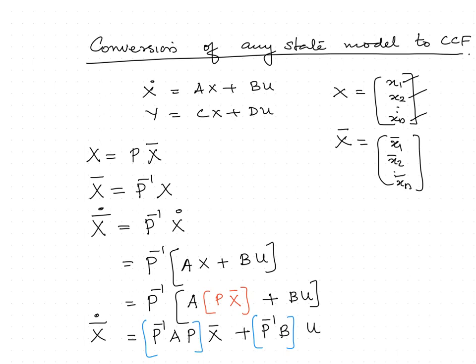We have seen that the original state equation is converted to the new state equation. Both equations represent the same system — the only difference is that the state vectors are different. In the original we have state vector x, and in the transformed form we have state vector x̄. The order of both state vectors is the same, whereas the nature or identity of the state variables will be different.